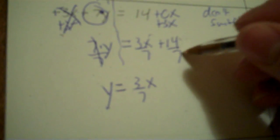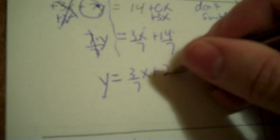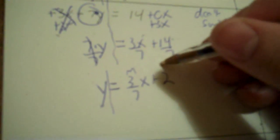Then you divide by 7. 3 divided by 7 is a decimal, so I keep it 3 over 7x. 14 divided by 7 is not a decimal — it's 2. m, b. So slope is 3 over 7, the y-intercept is plus 2.